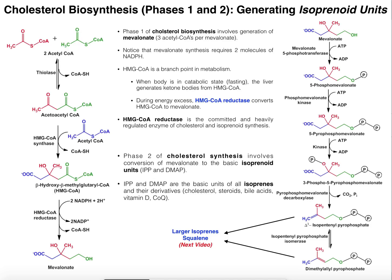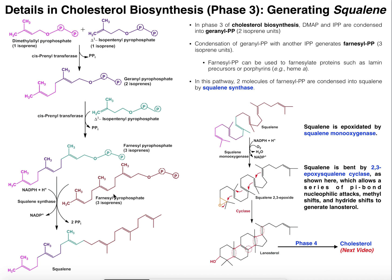In the previous two videos we saw phases one and two of cholesterol synthesis: first, generation of mevalonate (phase one), generation of our basic isoprenes IPP and DMAP (phase two), and then creation of squalene by isoprene condensation (phase three). Then I introduced phase four: how squalene is converted to squalene 2,3-epoxide by squalene monooxygenase, and then a cyclase enzyme — fully named 2,3-epoxysqualene cyclase — catalyzes the conversion of this into lanosterol.